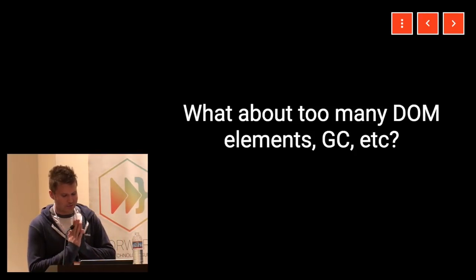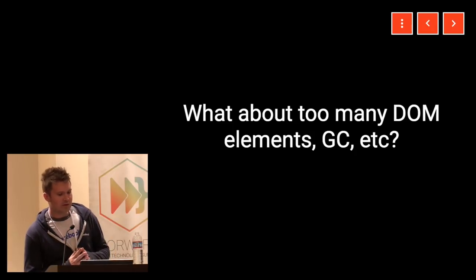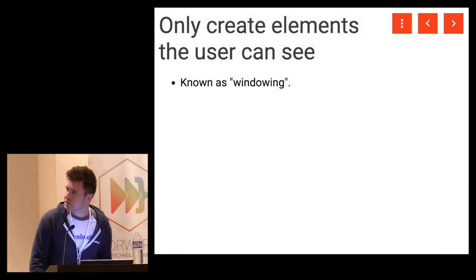Back to the DOM — one of the sources of slowness is creating too many DOM elements and garbage collection. The really high-level solution is to only create the elements that the user can see on the screen at a given time. This is known as windowing, and it's the focus of this talk.